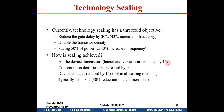All device dimensions are reduced by a factor of 1/α, where α is greater than one. Concentration densities are increased by α. This is because the junction depletion layers formed when two junctions are placed together are proportional to — or rather inversely proportional to — the doping concentration. When the device size is shrinking, those depletion layers also need to be thinner, hence we increase the concentration densities.